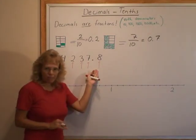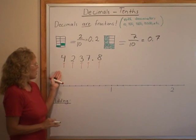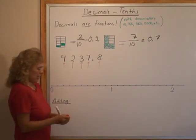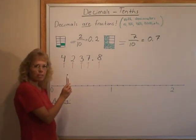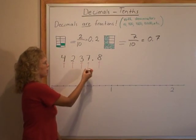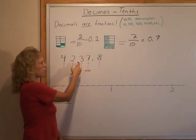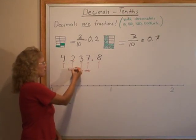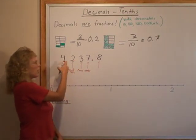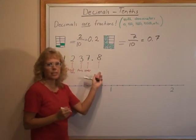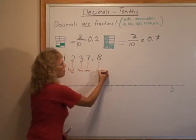Here I wrote a long number to emphasize our place value system. As children have already learned, in this place we have ones, in this place we have tens, here we have hundreds, and here we have thousands. And this place here tells us how many tenths.